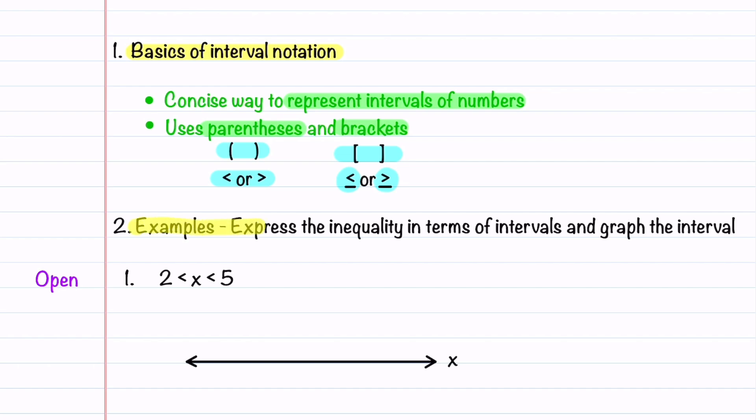Let's now walk through five different types of examples. We're given an inequality and we're going to write it in terms of interval notation, and then we'll graph the interval so that you can see exactly what it looks like.